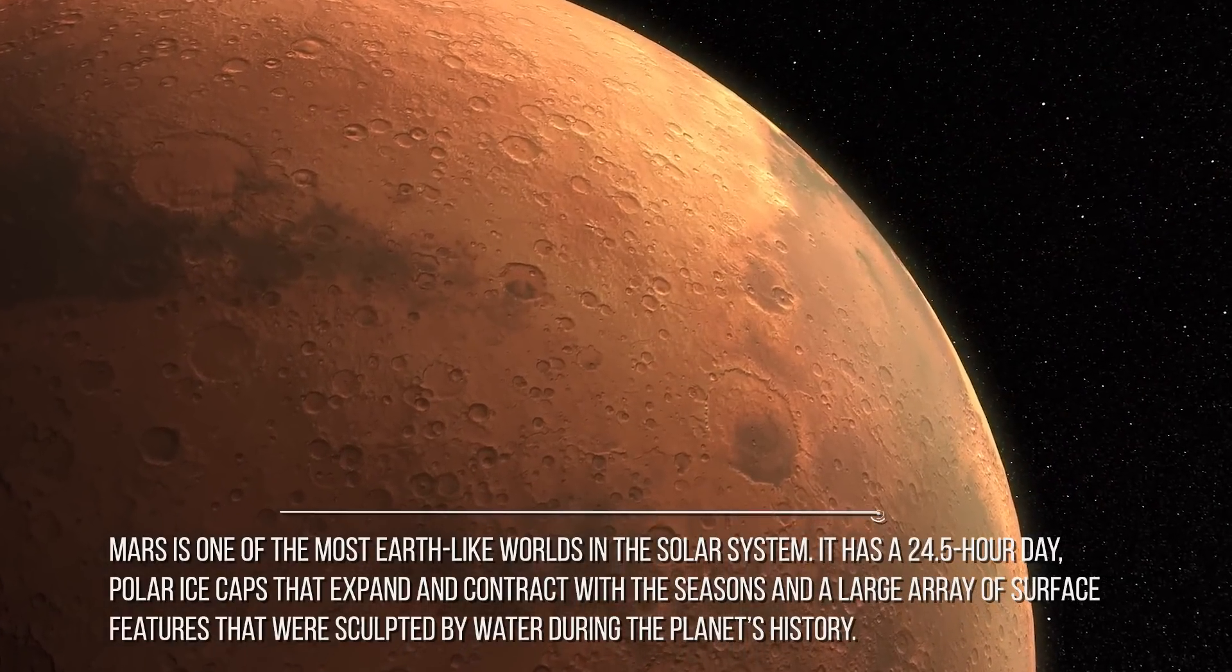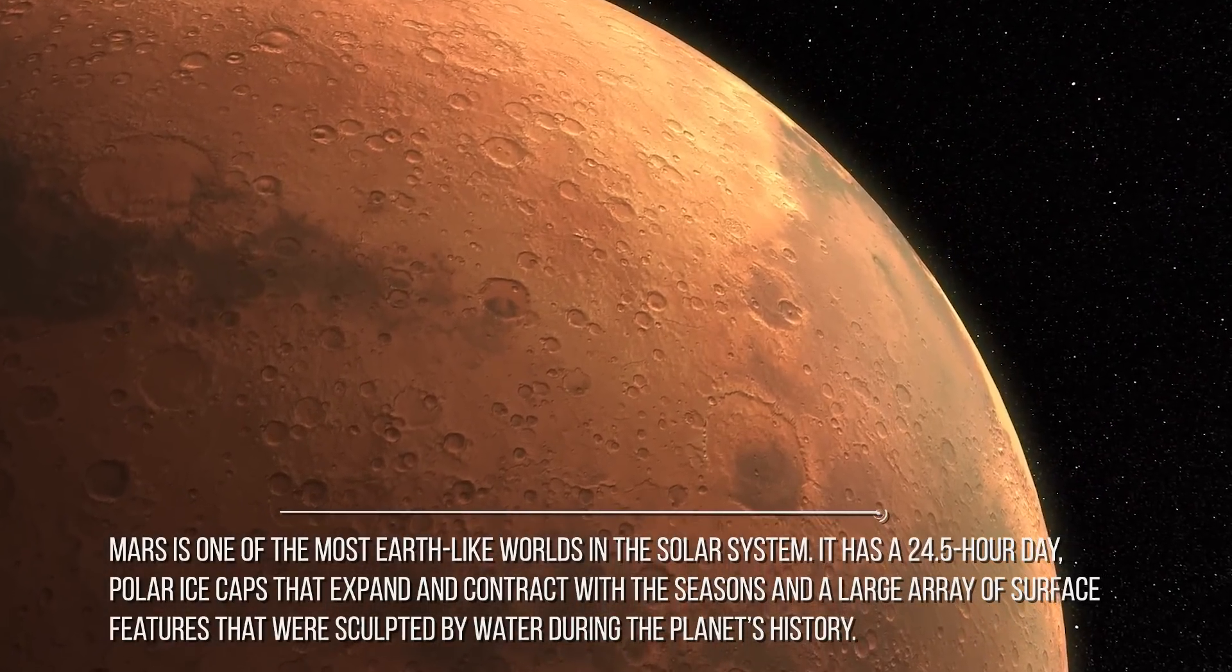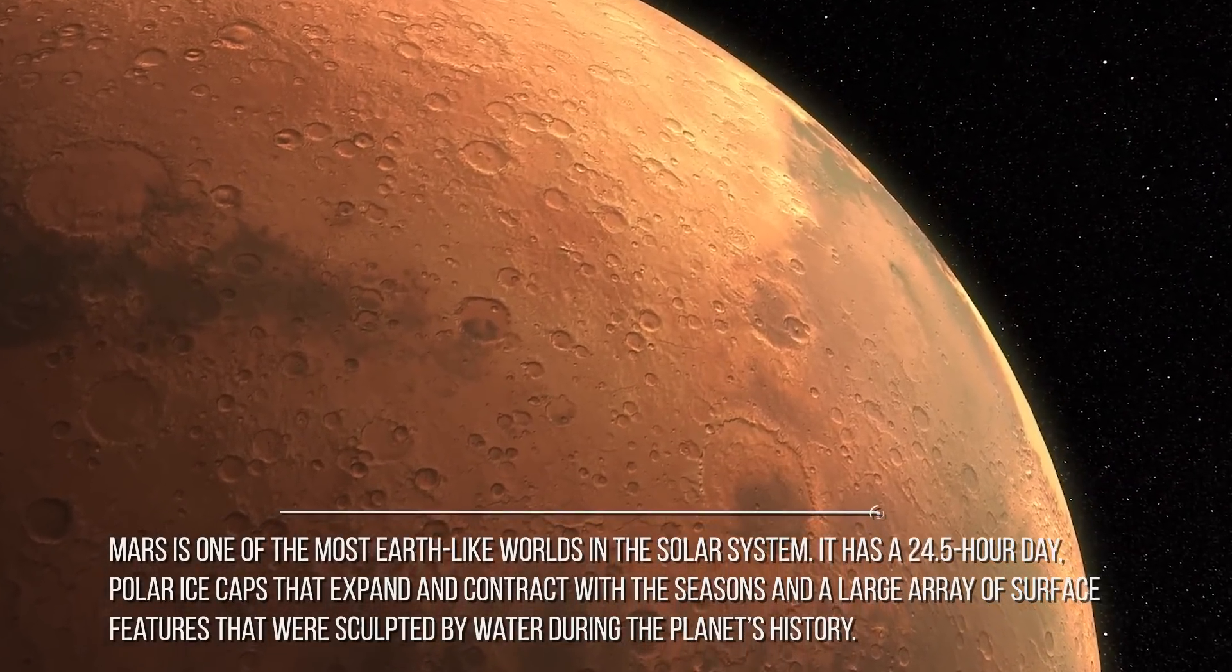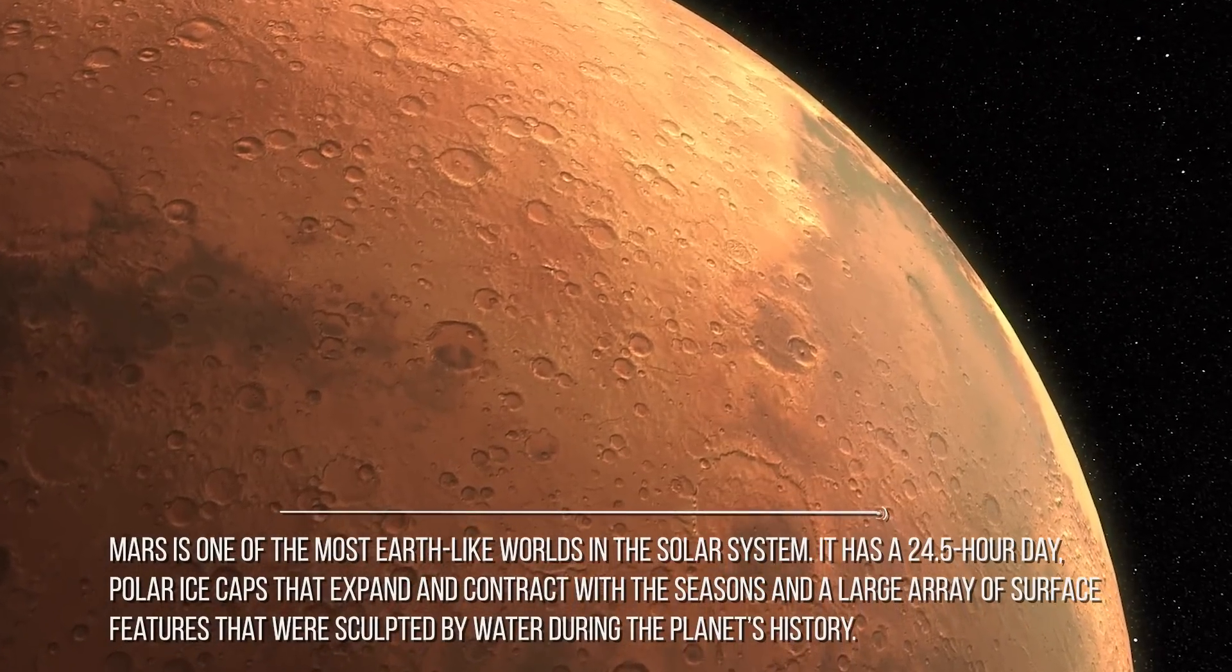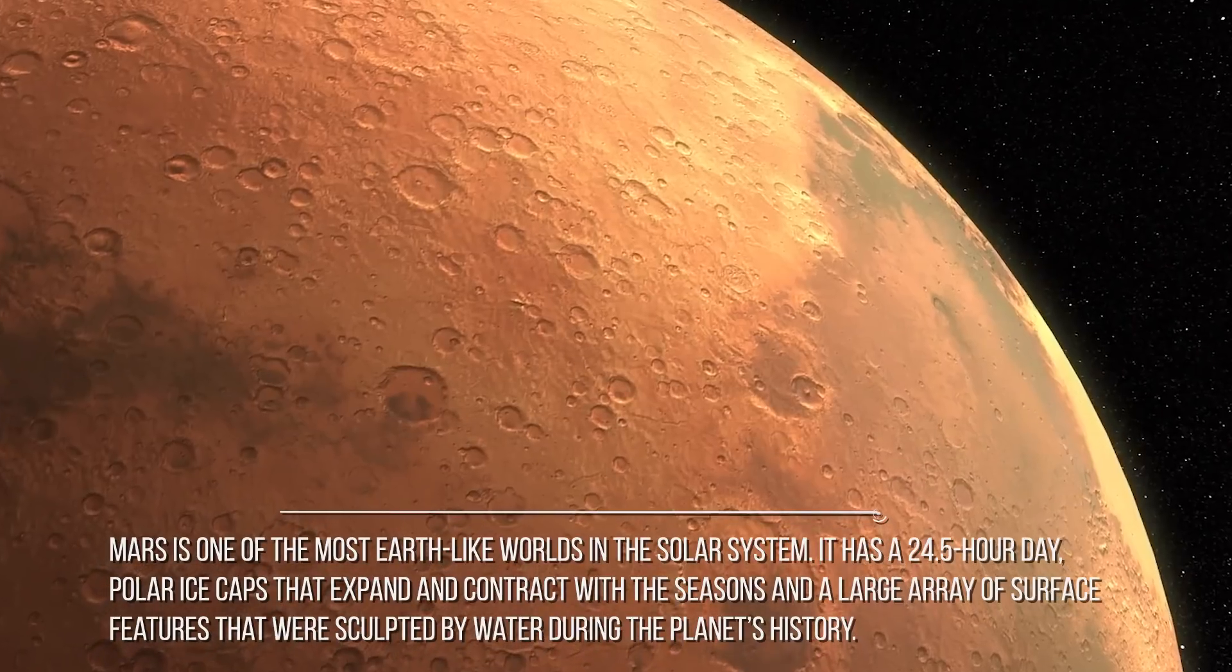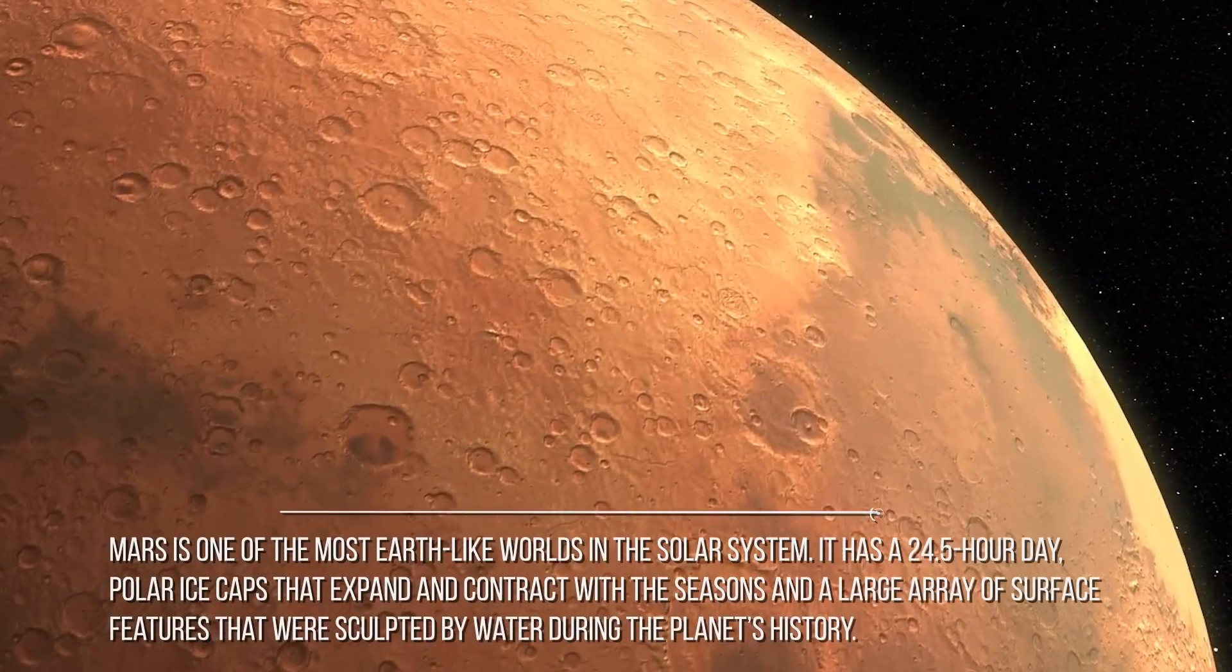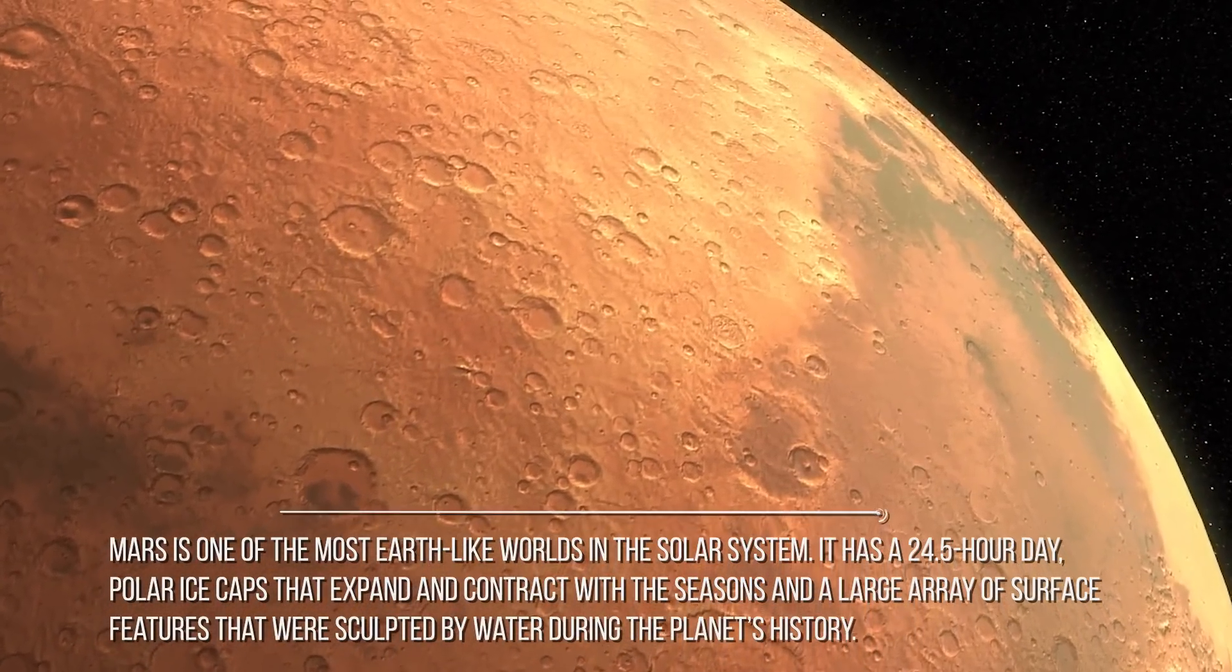Mars. Mars is one of the most Earth-like worlds in the solar system. It has a 24.5-hour day, polar ice caps that expand and contract with the seasons, and a large array of surface features that were sculpted by water during the planet's history.